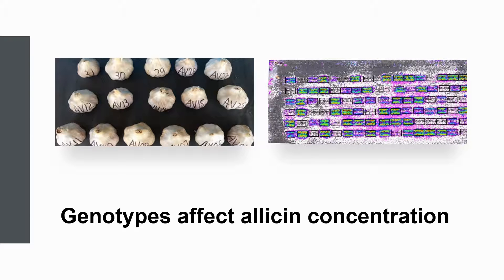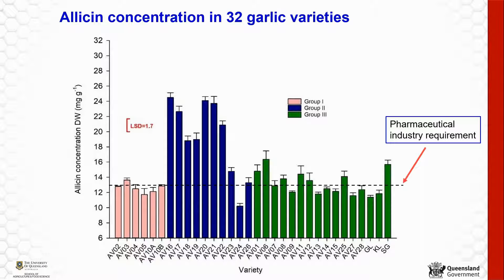Now, let me talk about how genotype affects allicin concentration in garlic. We have 29 garlic varieties from the World Vegetable Center and three Australian garlic varieties. The results show that allicin concentration was significantly different between garlic varieties, ranging from 10 to 24 milligrams per gram on a dry matter basis.